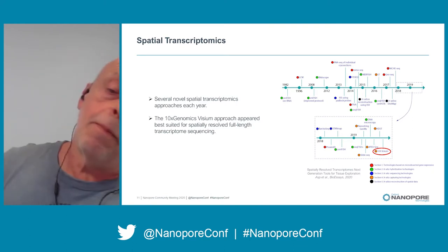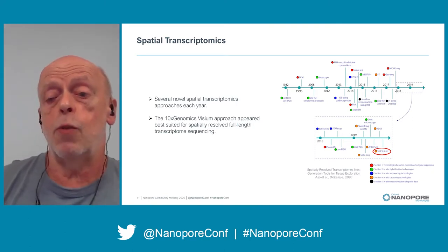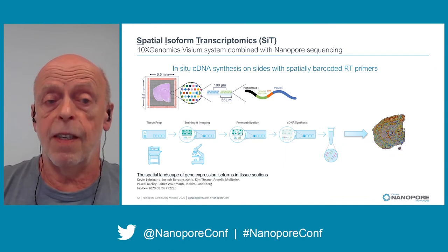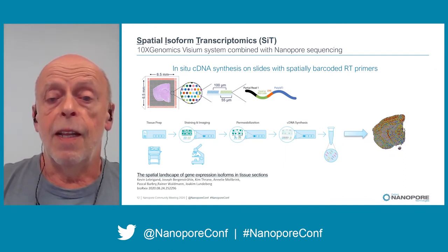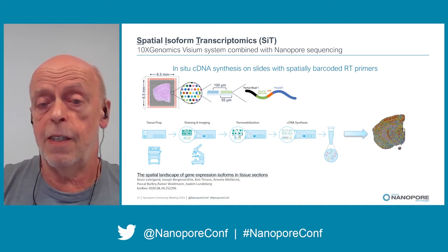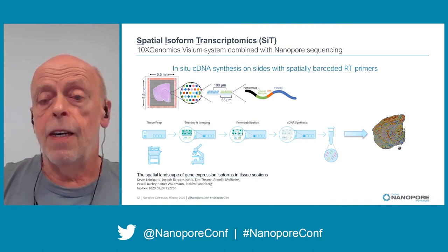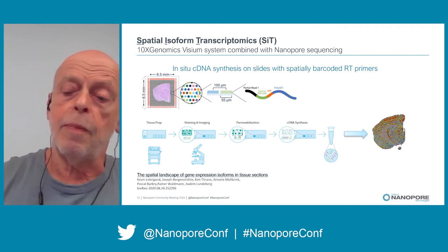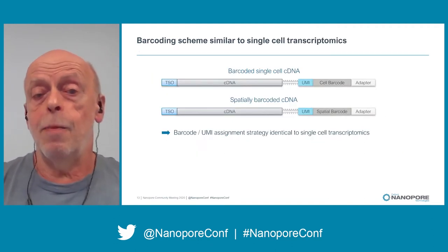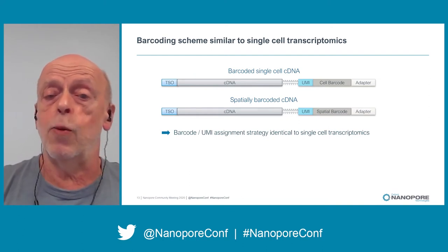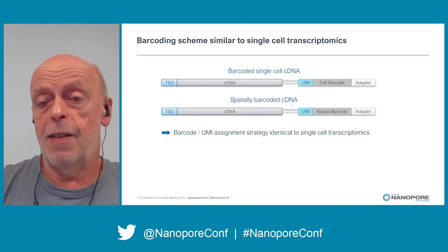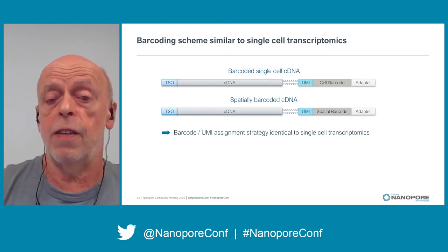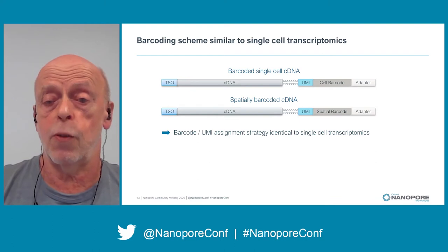To me, the most promising approach appeared to be the 10x Genomics Visium system. This system uses spatially barcoded primers created onto slides. The tissue section is permeabilized on the slide, cDNA is synthesized there, and after sequencing you get spatial gene expression information. Those spatially barcoded cDNAs look quite similar to single-cell cDNA — only the cell barcode is replaced by a spatial barcode. So we could use our barcode-UMI assignment strategy from single-cell transcriptomics also for spatial transcriptomics.